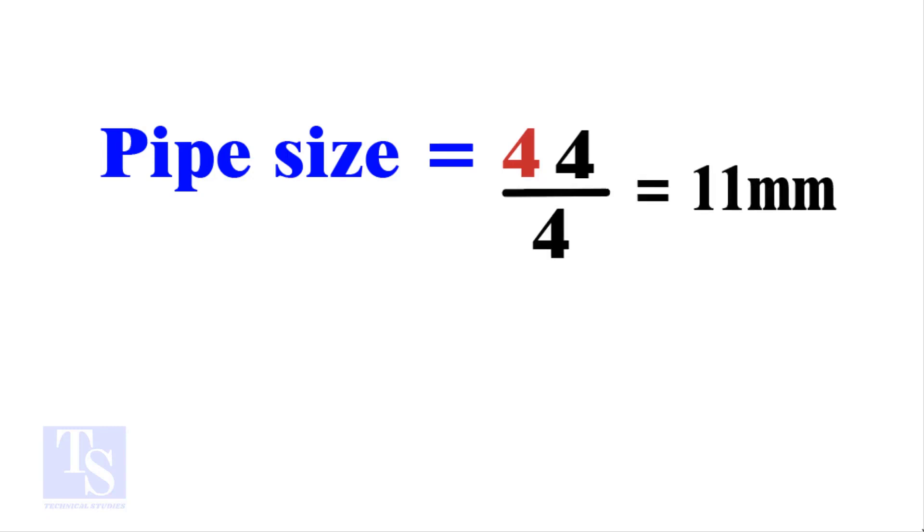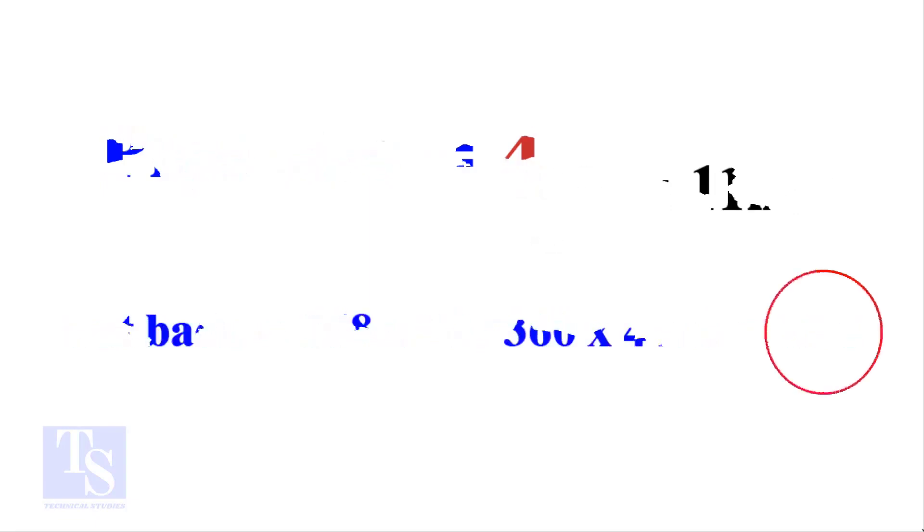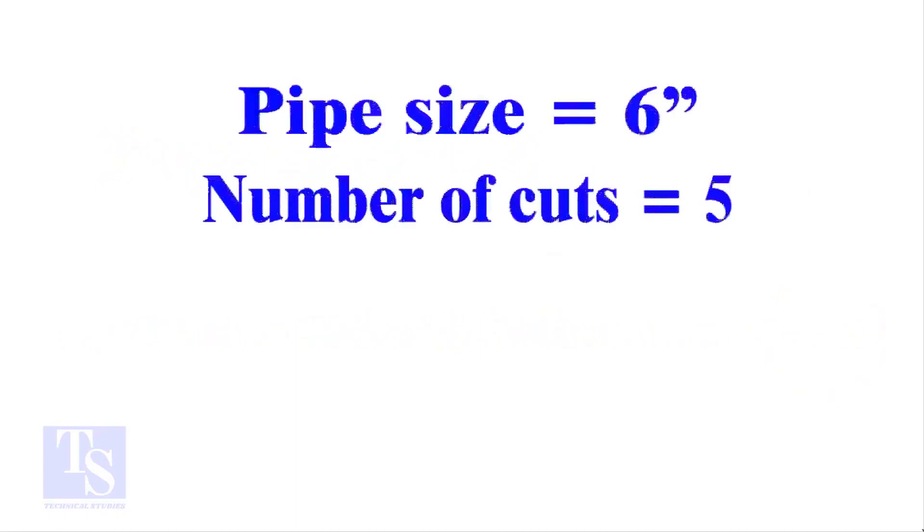Compare this with the answer to the previous calculation. Let me show you more examples. Pipe size 6 inches, number of cuts 5, and the answer is 13. Calculate the cutback in any method and compare it with this answer. Surprised?